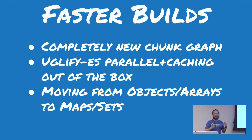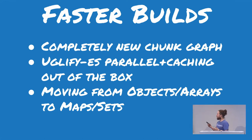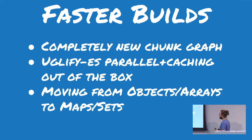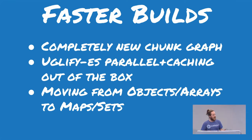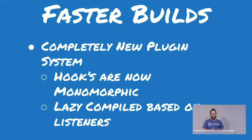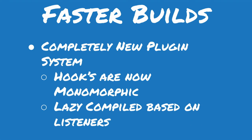We started by adding a bunch of features and optimizations, not only from upstream repositories like Uglify ES — adding parallel processing and caching — but we also rebuilt APIs that were internal, like our chunk graph. In addition, we moved a lot of the native objects and arrays we used to have and converted them to maps and sets for ES6 support. And probably one of the most important things we did for build speed was completely rewrite the plugin system from the ground up.